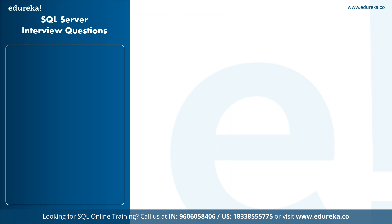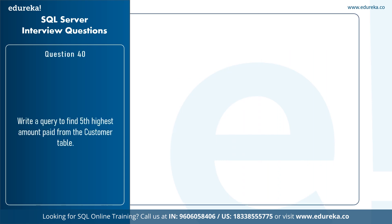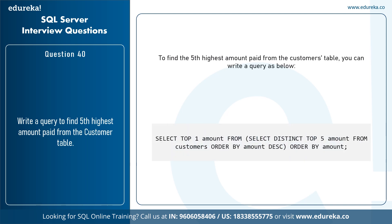The next question is: write a query to find the fifth highest amount paid from the customers table. The query is: 'SELECT TOP 1 amount FROM (SELECT DISTINCT TOP 5 amount FROM customers ORDER BY amount DESC) ORDER BY amount'. The inner query retrieves the top 5 distinct amounts in descending order, and the outer query picks the first (lowest) amount from those results, which is the fifth highest.